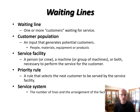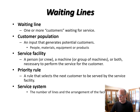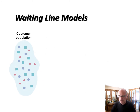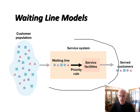The service system thinks about the number of lines and the arrangements of the service facility. Do we have a grocery store model with multiple lines and multiple cashiers? Or like a bookstore where they have multiple cashiers and a single line? Or like a Tim Hortons drive-thru with one place to order and another to pick up, so you have sequential phases? All of those affect how people or products flow through the system — from customer population, to line, to priority rule, to service facilities, to served customers.